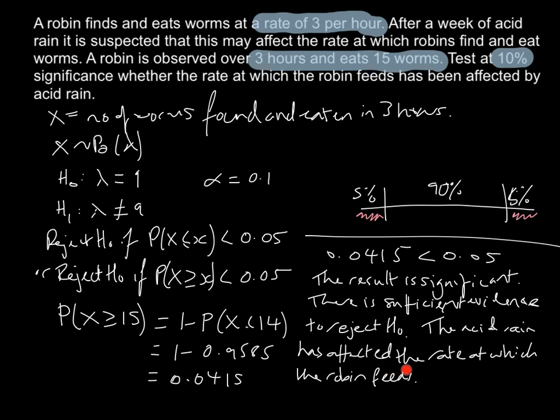We've been looking at a two-tail test in this example, where you split the significance level alpha into two parts — in the lower tail and in the upper tail. In the next video, we're going to be looking at finding critical regions when doing hypothesis testing.